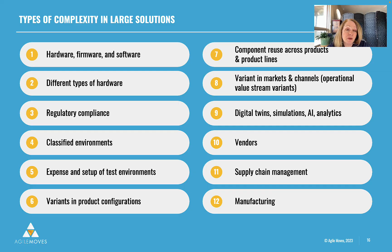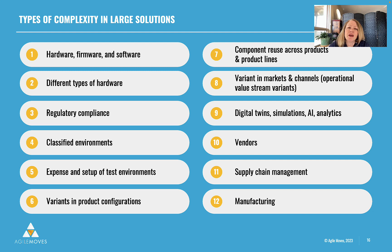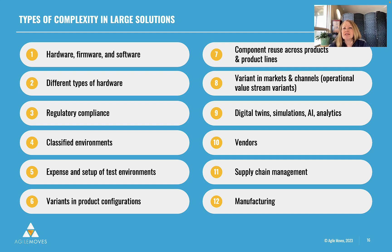Here are some types of complexity that we see in large solutions — not an exhaustive list, but certainly ones that make a huge difference: if we're building hardware-based systems, if we have a large degree of component reuse. Now we're moving into the world of artificial intelligence, digital twins, and data analytics, just compounding the complexities that we have in the largest systems.